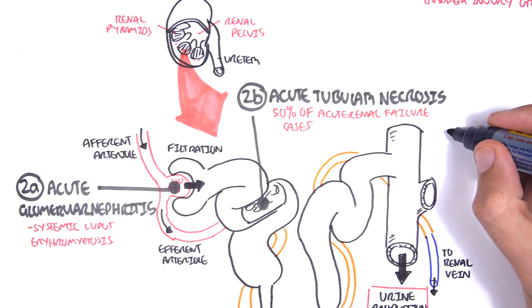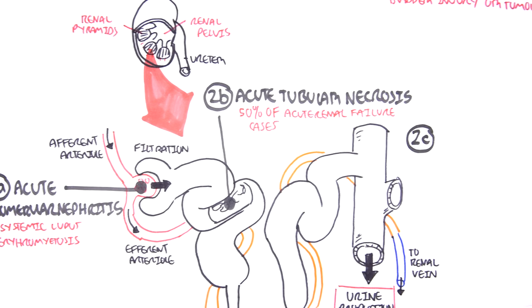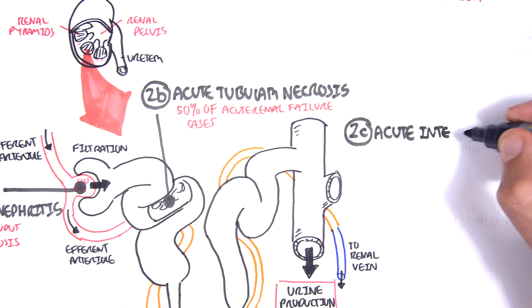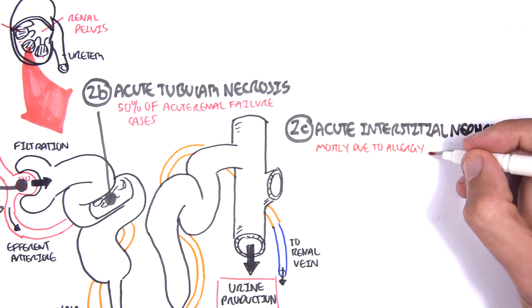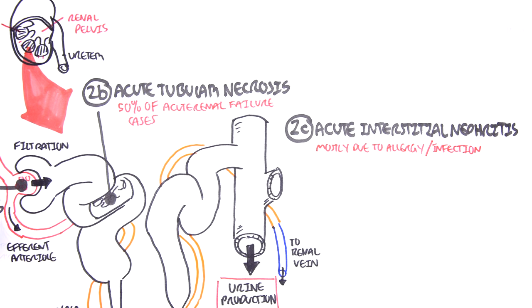And then we have acute interstitial nephritis, which is literally inflammation of the interstitial space in the kidneys. And we see this mostly in allergic reactions as well as infection.